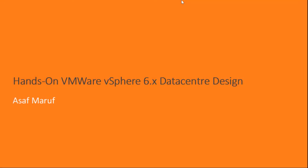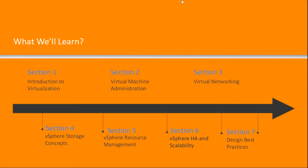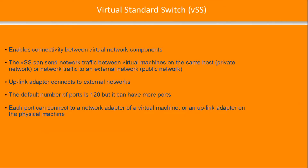Section 3, Video 5: Virtual Network Switch Standard and Virtual Network Switch Distributed. The virtual standard switch enables connectivity between virtual network components. It can send traffic between virtual machines on the same host, which can be termed as a private network, or route network traffic to an external network like a public network. An uplink adapter enables connectivity to external networks.